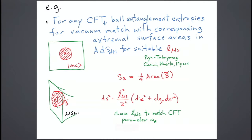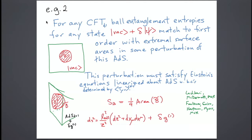That's maybe not too exciting because we're looking at just one state — the vacuum — and asking about entanglement entropies in ball-shaped regions. But we can start asking about more general states of the CFT. Instead of just the vacuum state, consider any first-order perturbation to that state. Again, I'm interested in what is the entanglement entropy of an arbitrary ball-shaped region in this new state.